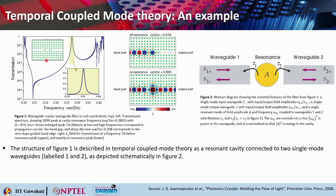The dark spots are rods in the photonic crystal. You have a waveguide, then a cavity, then another waveguide. The transmission spectrum shows around 100% transmission peak at the cavity resonance frequency omega_a / (2*pi*c) = 0.3803, with a quality factor of 410. The inset shows the enlarged peak, and the oscillations at low and high frequencies correspond to propagation outside the band gap. The sharp dip at omega_a / (2*pi*c) = 0.308 corresponds to the zero-slope guided band edge.